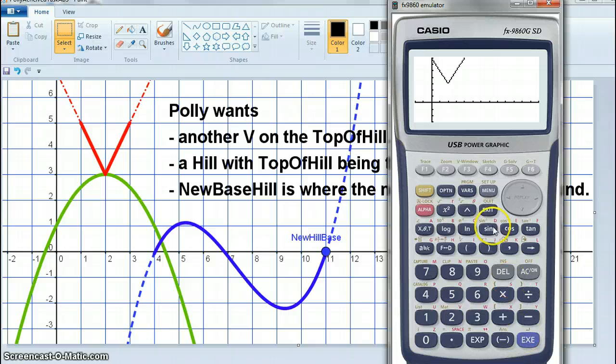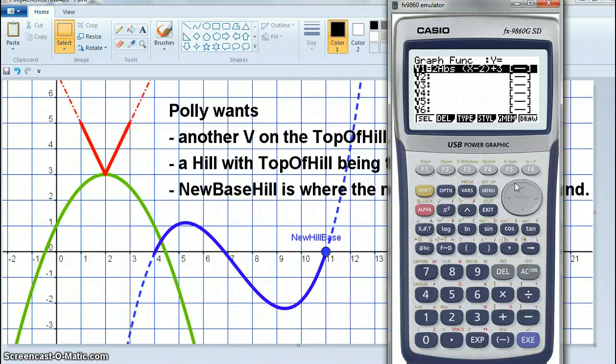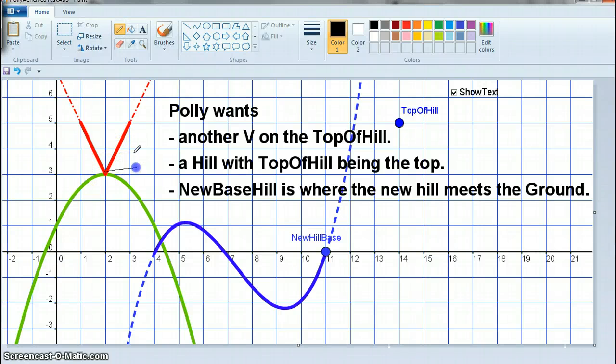So how did I get that absolute function? I went 2 because I could see that my gradient here was 2. That's where I got that 2 from. And I could see that this shape was absolute.